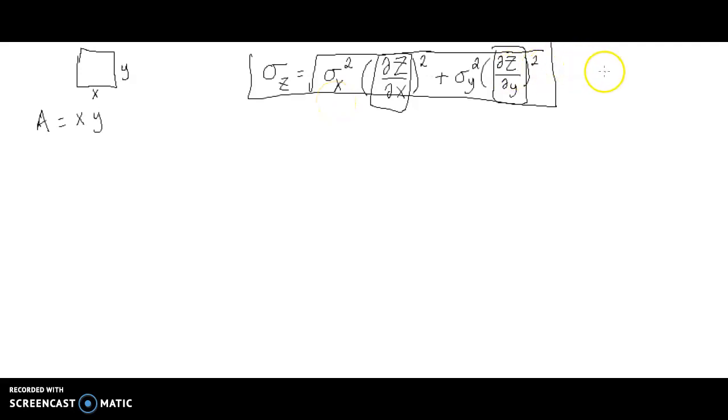So in this course, essentially anytime you see a sigma symbol like this, this is going to represent some uncertainty. Alright, so this is a measure of how well you are able to perform a measurement and your uncertainty is going to be dictated by different factors when you take different types of measurements, but every measurement has some inherent uncertainty with it.